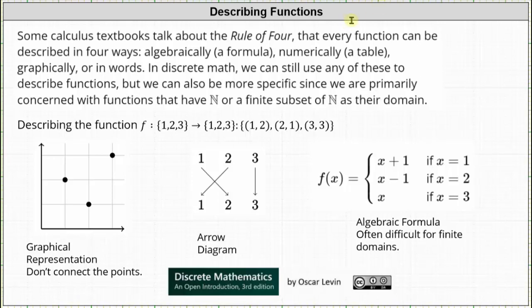Welcome to a lesson on describing functions. Some calculus textbooks talk about the rule of four — that every function can be described in four ways: algebraically as a formula, numerically as a table, graphically, or in words. In discrete math we can still use any of these to describe functions, but we can also be more specific since we are primarily concerned with functions that have the set of natural numbers or a finite subset of the natural numbers as their domain.